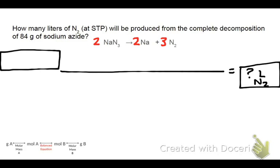And then it does give us a number here, which is 84 grams of sodium azide, which is this NaN3. Looking at this, we're starting with grams of one substance, right, sodium azide.